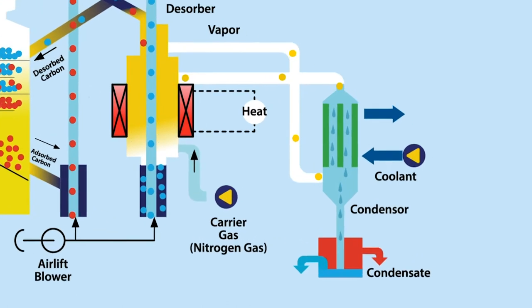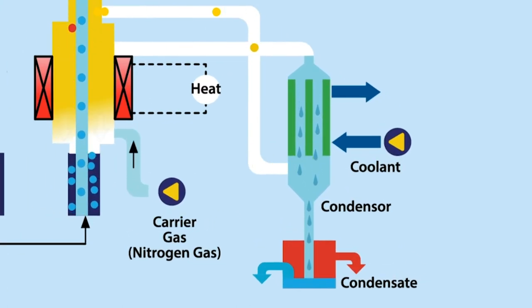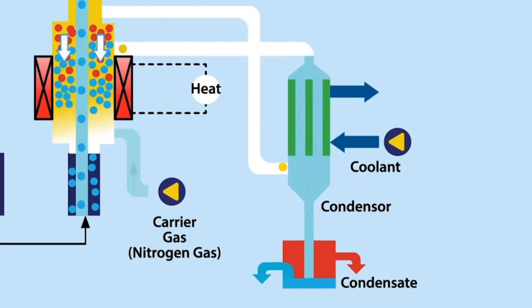In the condenser, the vapors hit the very cold surfaces of the tube and shell style condenser to convert the vapors to liquid. The liquid is then collected and sold.